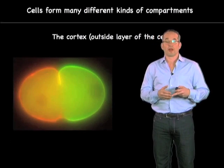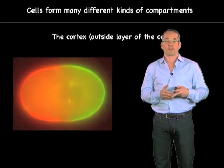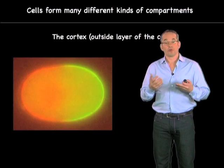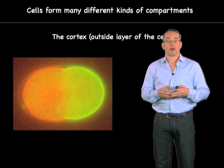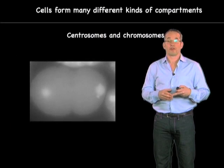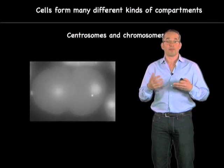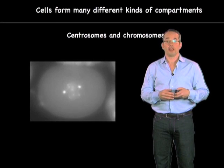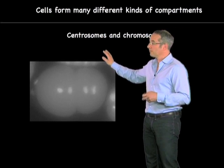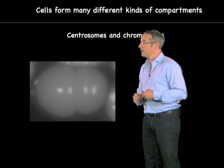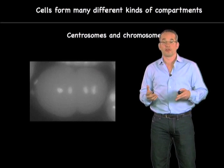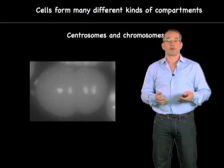Let me show you some movies — some other compartments such as the cortex, which is the outside layer of the cell. That, as an example, is also a very interesting compartment. We can also look at centrosomes and chromosomes, which are other compartments in the cells. Here is a movie of mitosis where we've labeled the centrosomes and the chromosomes with GFP, and you can see them going through mitosis. These are also large compartments which are organized from many different protein complexes.